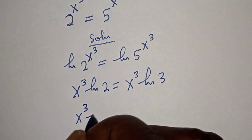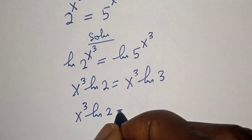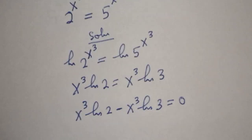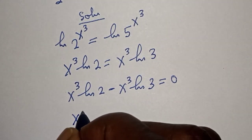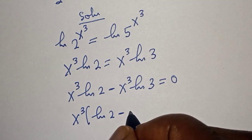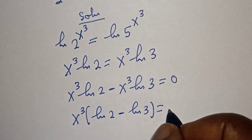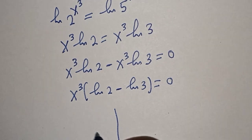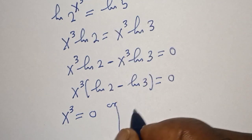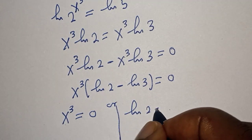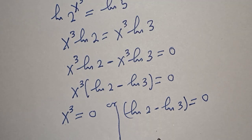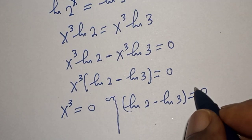Now let's bring this to one side: s³ natural log of 2 minus s³ natural log of 5 is equal to 0. Factoring out s³: s³ times (natural log of 2 minus natural log of 5) equals 0. There are two cases here — s³ equals 0, or natural log of 2 minus natural log of 5, which cannot equal 0.